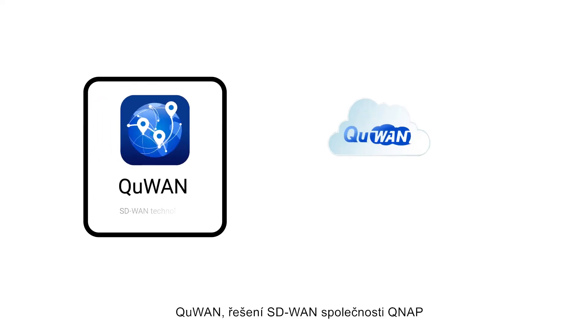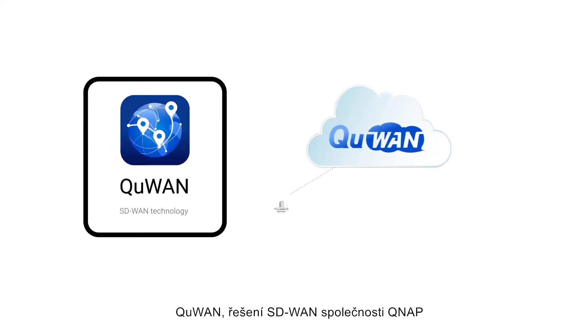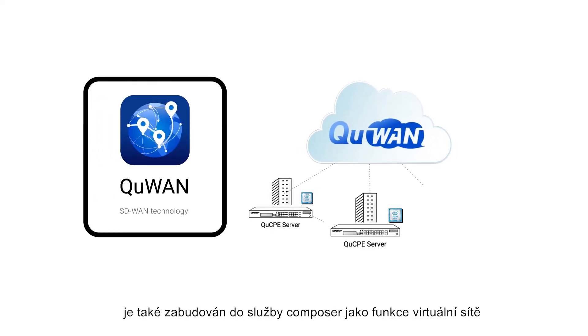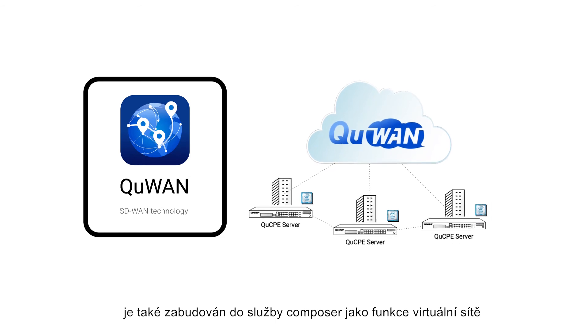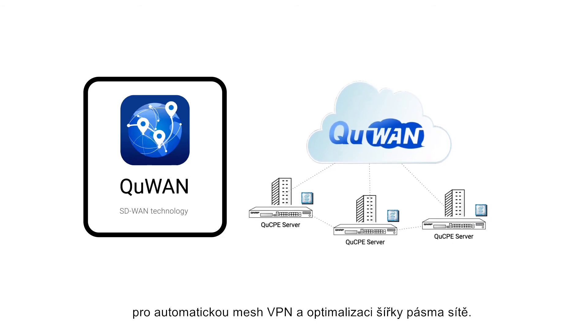QWAN, QNAP's SD-WAN solution, is also built into the Service Composer as a virtual network function for auto-mesh VPN and network bandwidth optimization.